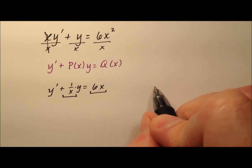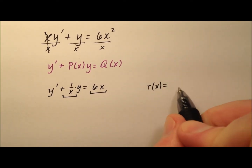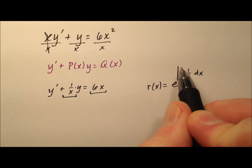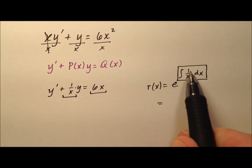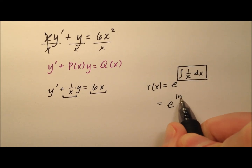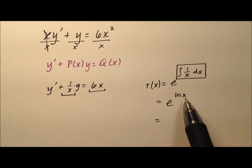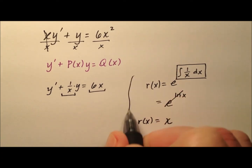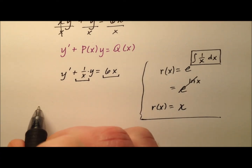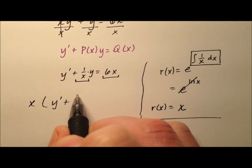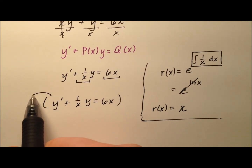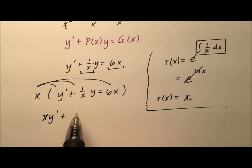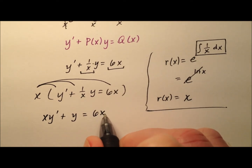The first thing to do is determine the integrating factor. r of x equals e to the power of the integral of p of x, which is 1 over x dx. The integral of 1 over x with respect to x is the natural log of x, so r of x equals e to the ln of x. Since e and ln are inverses of one another, our integrating factor is simply x. We multiply our equation through by x, distributing to every term: xy prime plus x times 1 over x times y, which simplifies to y, equals 6x squared.